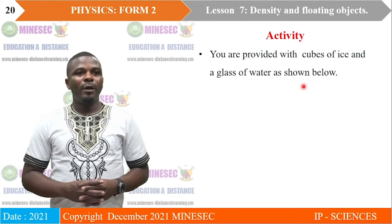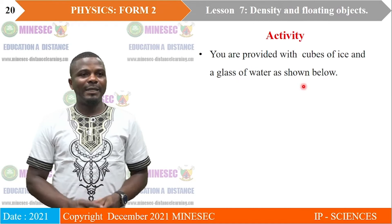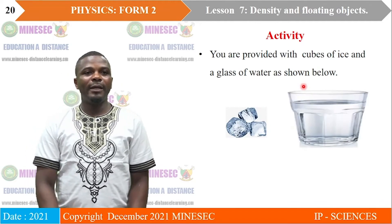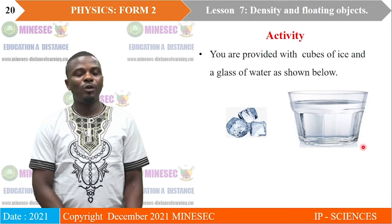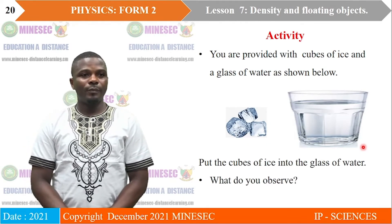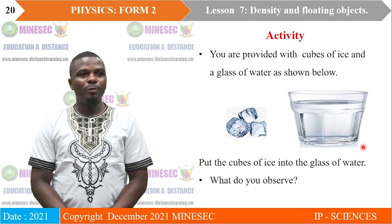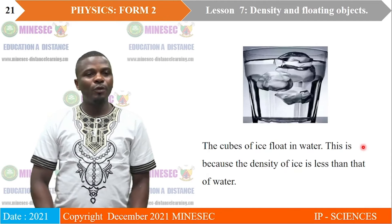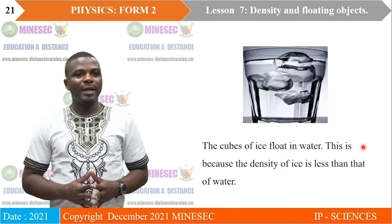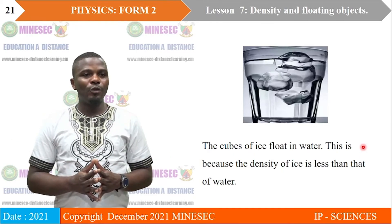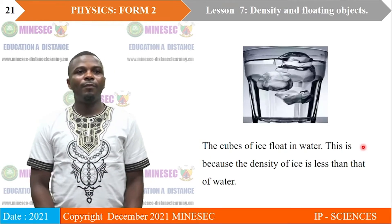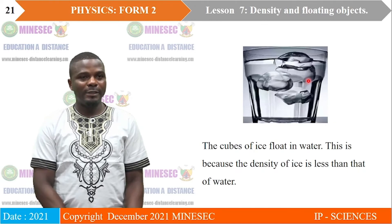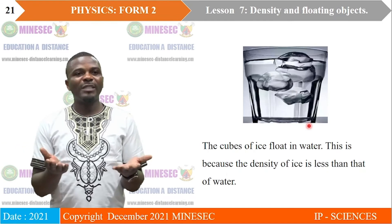Activity: You are provided with cubes of ice and a glass of water. Put the cubes of ice into the glass of water and observe what happens. By the time you put the ice cubes into the glass of water, you realize that the ice stays on top — the ice cubes float. This is because the density of ice is less than that of water. Ice is less dense than water, and that is why ice will always float on water.